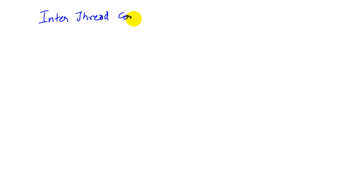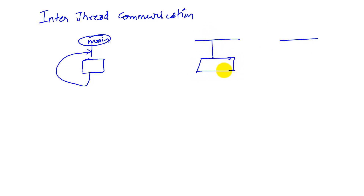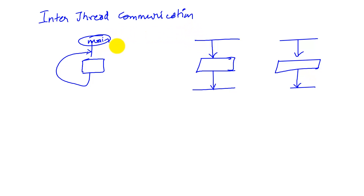Let's take a look at inter-thread communication. Remember that we talked about how we have our main program which is running some code repeatedly, and we have our background threads. A background thread is an interrupt service routine that has been triggered — it performs some task and returns from the interrupt, and there could be a second one and so on. So the question is: how does information get passed between the main thread and the background thread?